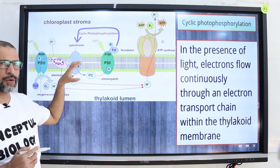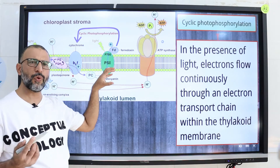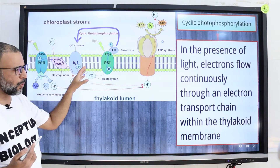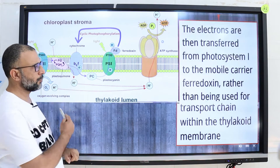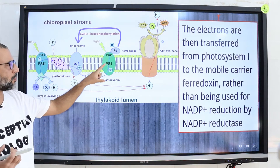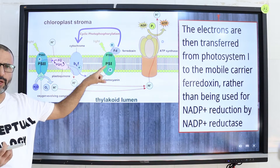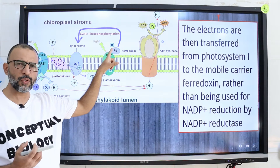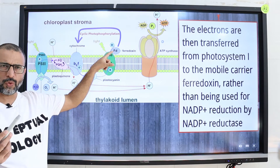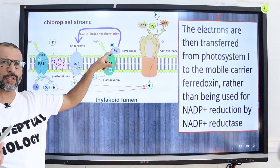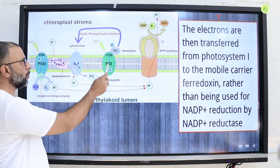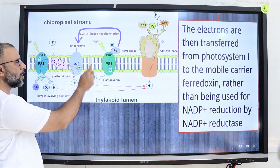In the presence of light, electrons flow continuously through the electron transport chain within the thylakoid membrane. The photo-excited electrons are transferred from photosystem 1 to the mobile electron carrier called ferredoxin. Rather than being used for NADP reduction by NADP reductase enzyme, these electrons move from ferredoxin to the cytochrome complex.